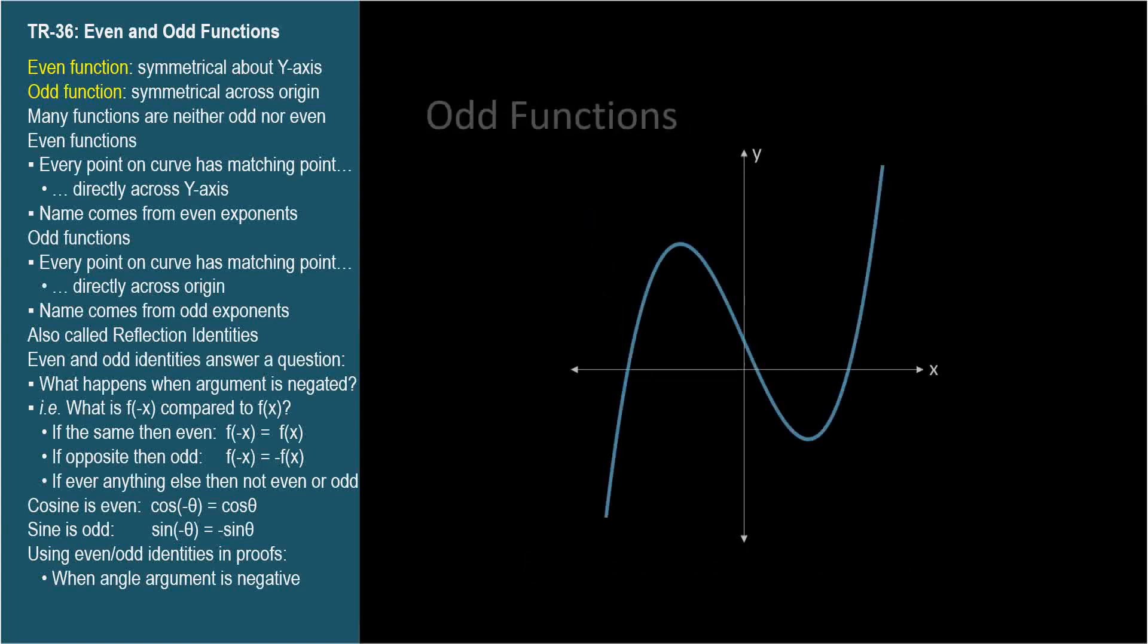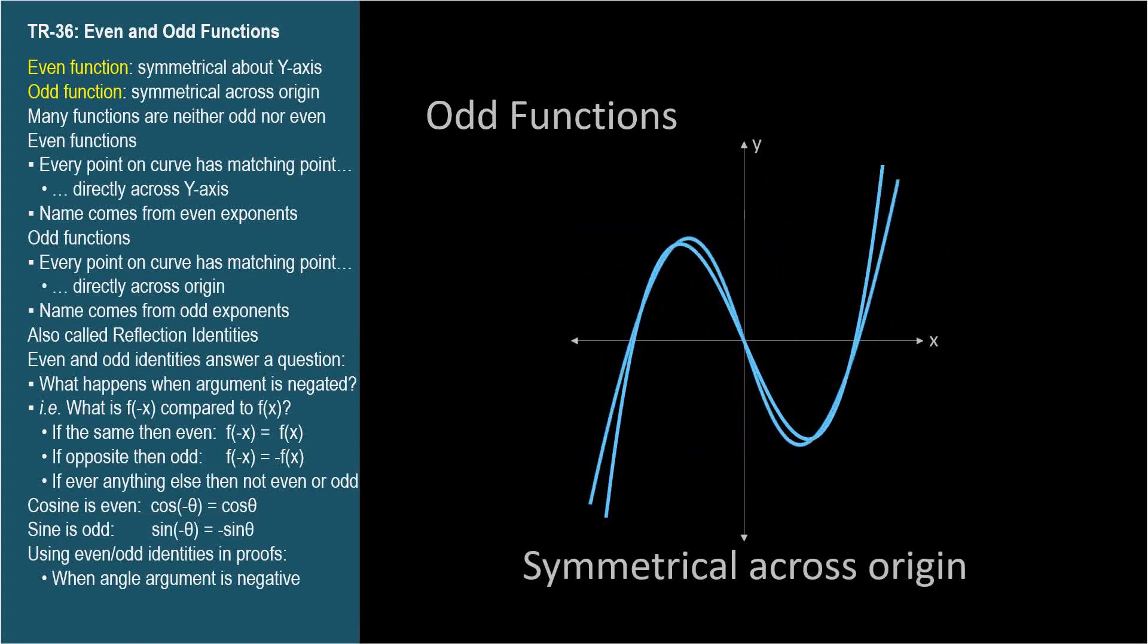An odd function has this characteristic. Its graph is symmetrical across the origin. Every point has an associated point directly across the origin. So an odd function's graph is the same when spun around 180 degrees.